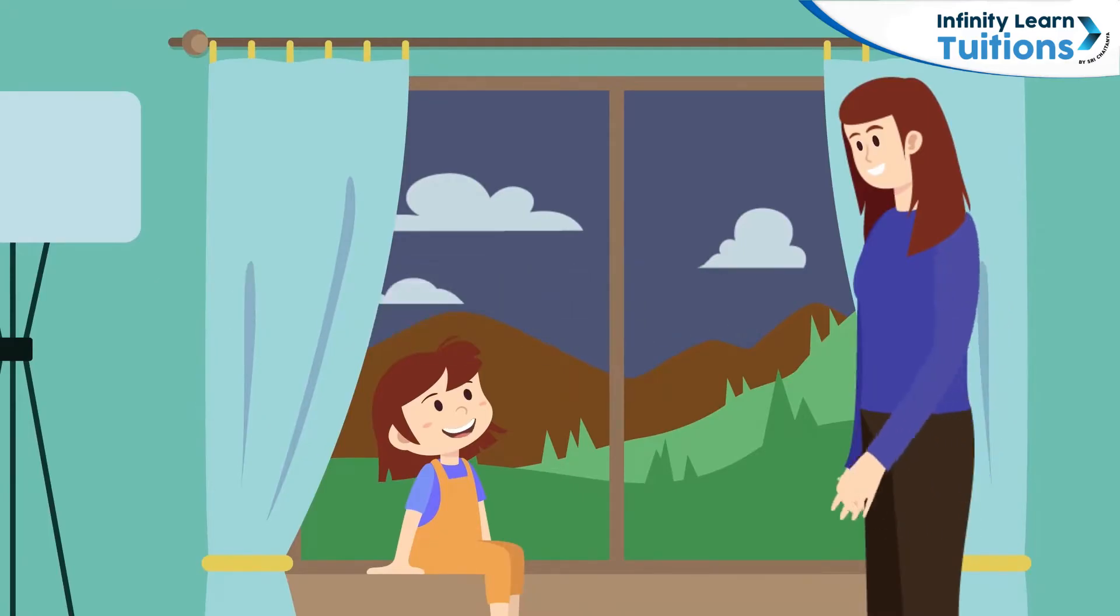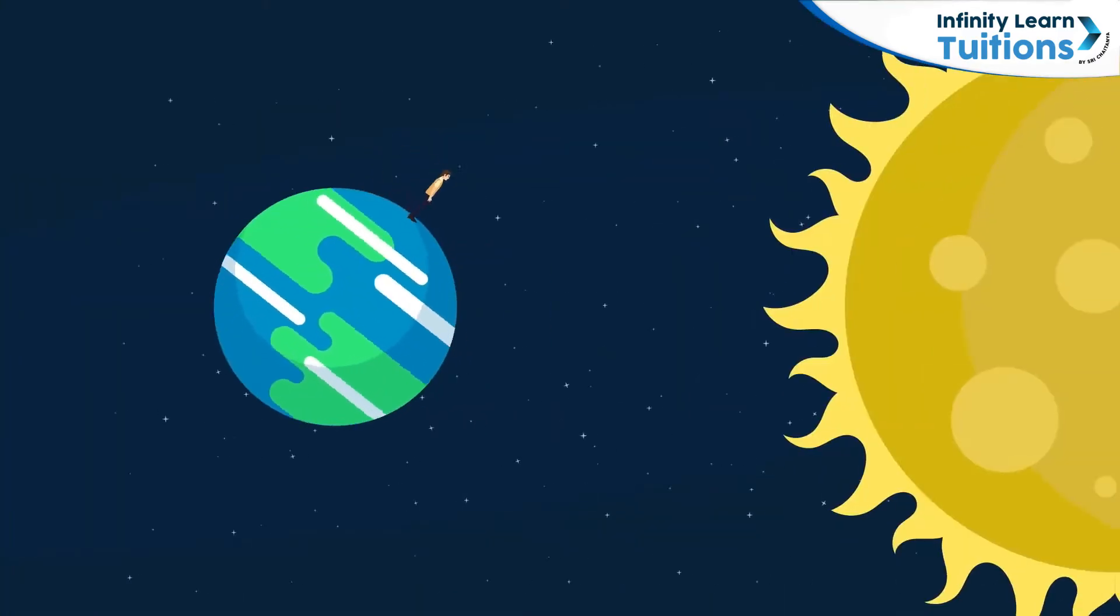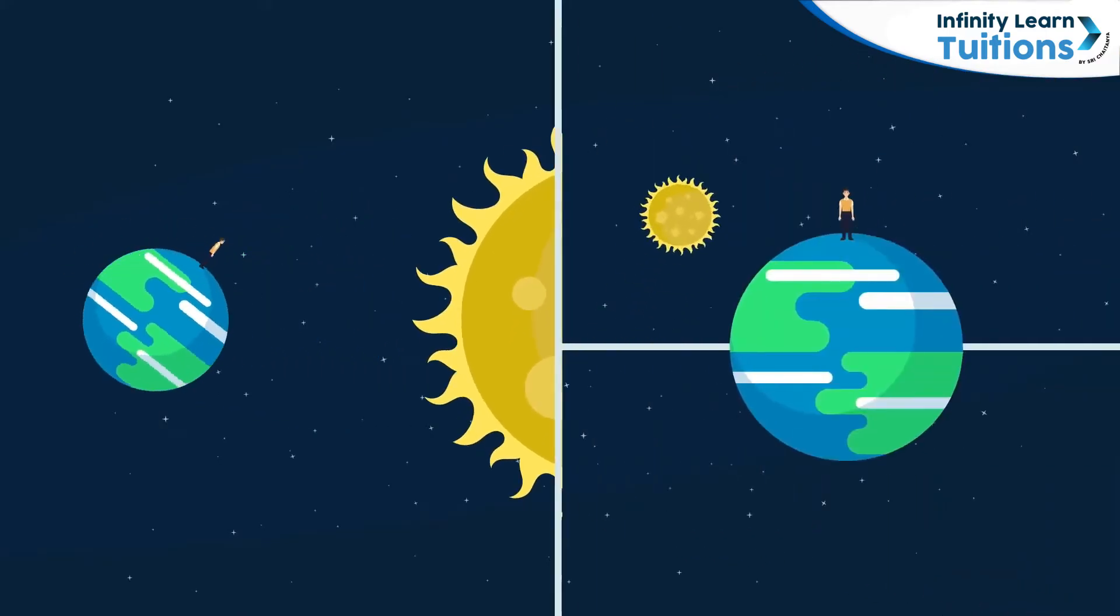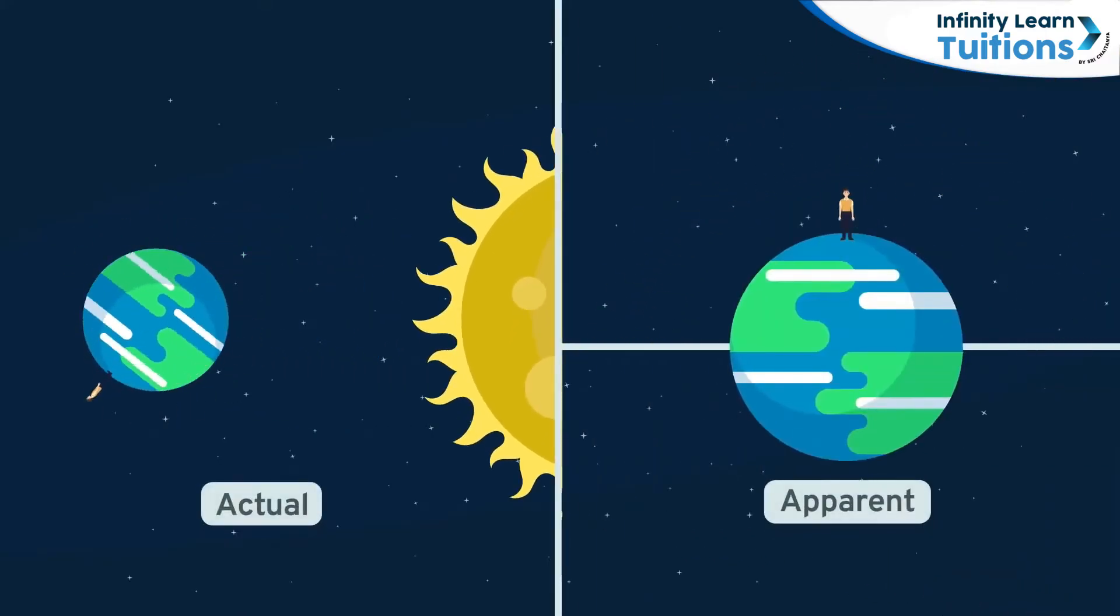To this, her mother told her that the sun doesn't move at all. It is the earth which is moving around the sun. Since we are moving along with the earth, we cannot differentiate its motion and we feel that the sky moves.